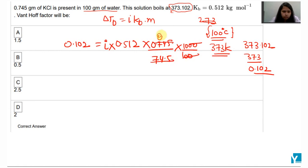On solving, these values will cancel out, and it would be around 2.